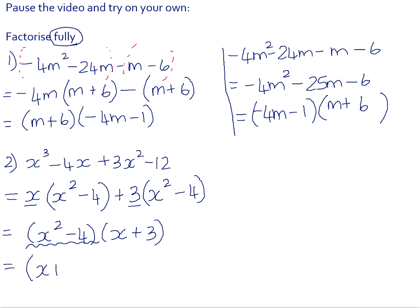So we need to recognize that X squared minus 4 is the difference of two squares. It will factor into X plus 2 times X minus 2. And then don't forget that we still have to multiply that by the factor of X plus 3.